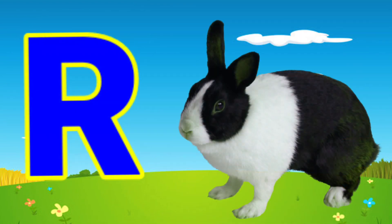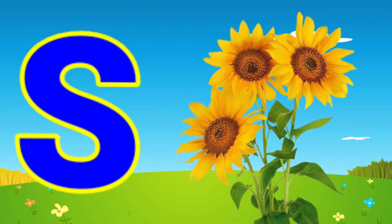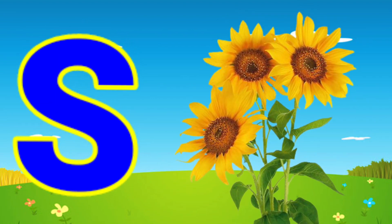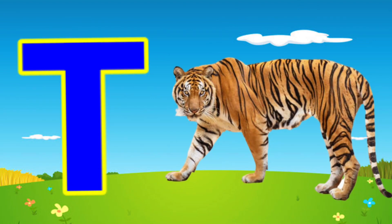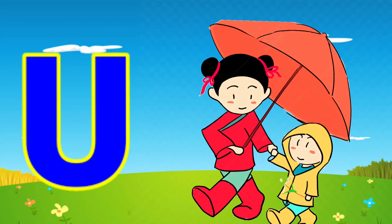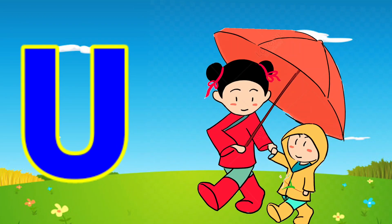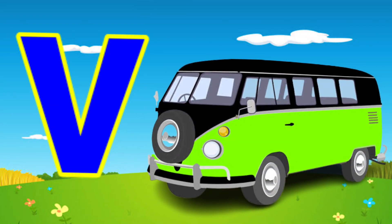R for rabbit, S for sunflower, E for tiger, U for umbrella, V for bell.